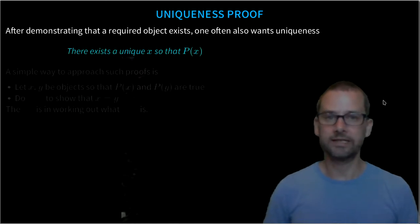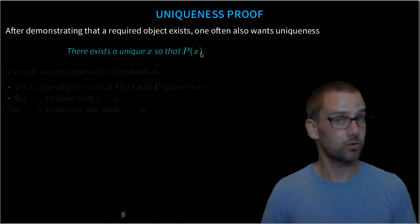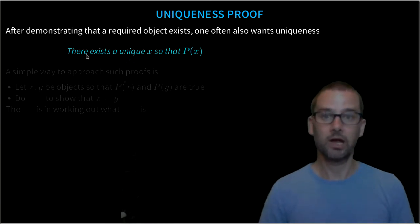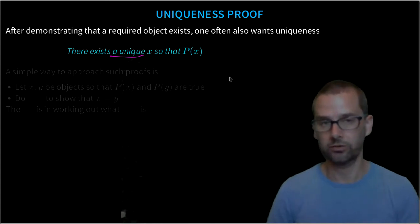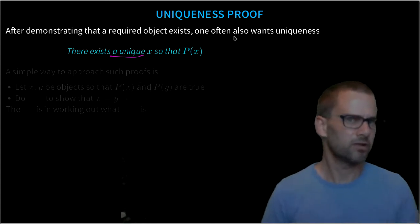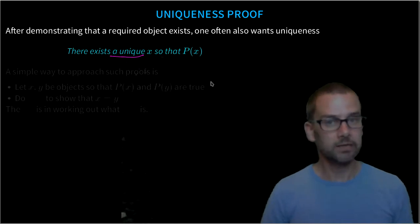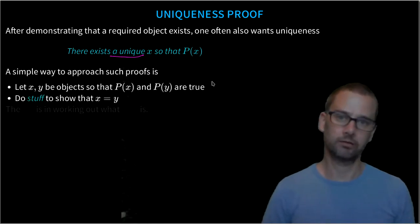Once we've proved the existence of an object, one also frequently wants to prove the uniqueness of that object. So there exists a unique object x so that P(x). Sometimes this can be taken to be another sort of quantifier, the unique existential quantifier, but let's just think of it as proving uniqueness on top of existence. A simple way to approach such proofs is to do something like the following.